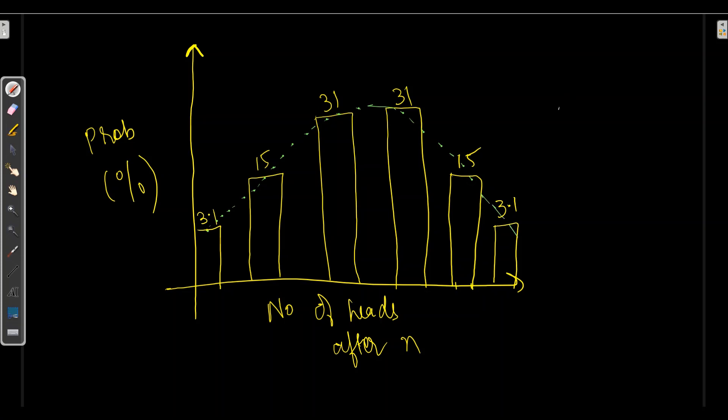So for this if I calculate mean it will be NP, N is 5 and probability of getting head is 0.5 which will be 2.5. And if I calculate variance, it will be NP times 1 minus P. So N is 5, P is 0.5 and 1 minus P is also 0.5 which will be 5 times 0.5 is 2.5, 2.5 times 0.5 is 1.25. Now this graph we calculated for fair coin.